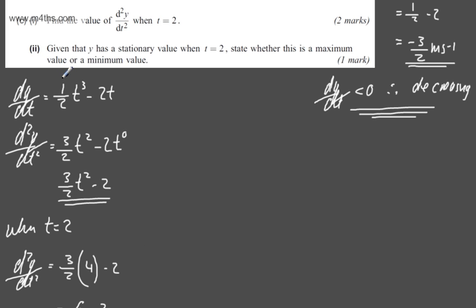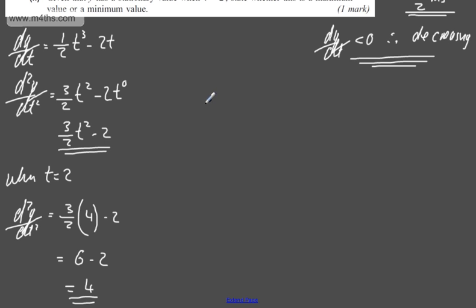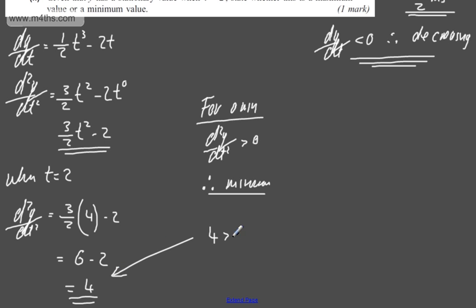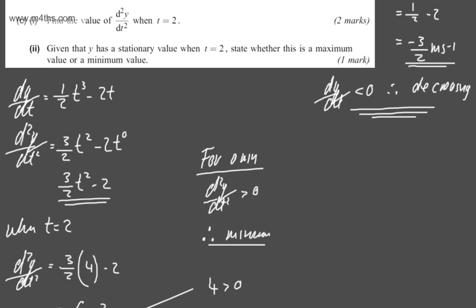In the second part for one mark, it says given that y has a stationary value when t equals 2, state whether this is a maximum or minimum value. We can state now for a minimum, for a min, we can have now d²y by dt² greater than 0, therefore minimum. So I'm stating that this value right here is greater than 0, 4 is greater than 0, therefore we're going to have a minimum point.